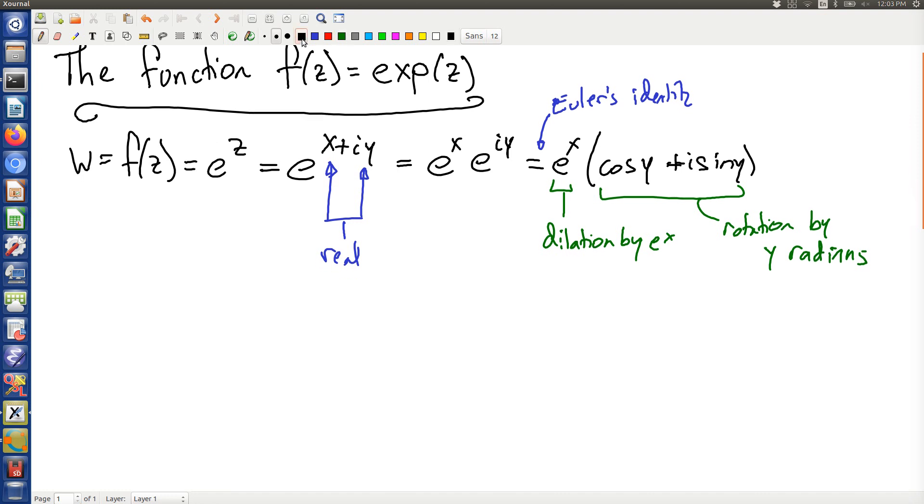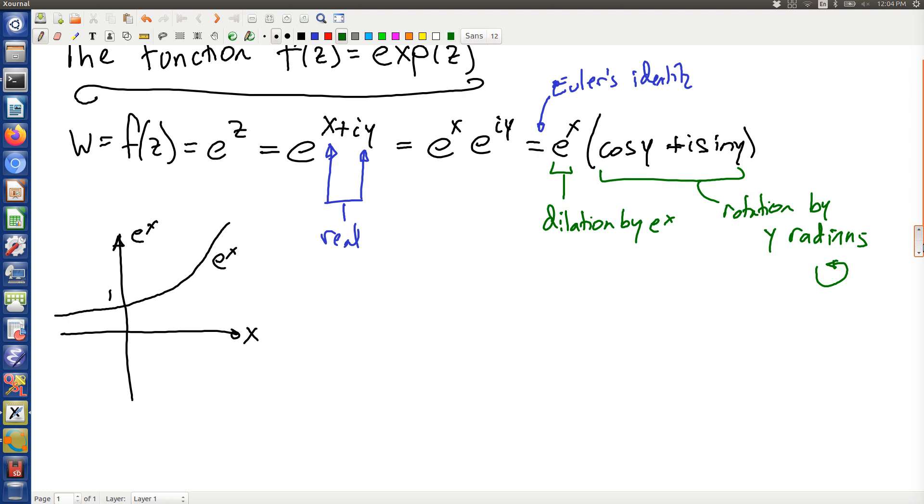Now just to recall what e to the x does, e to the x is an exponential function. A rotation by y radians will take your point and spin it around. In particular, it's a rotation by y radians in the counterclockwise direction. So taking these two pieces together we can really understand what this function does.